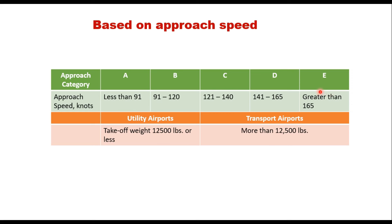FAA, based on approach speed, also specifies airports into two categories: utility airports and transport airports. When the takeoff weight is 12,500 pounds or less, they are called utility airports — small airports serving small aircraft. When the weight of the aircraft is more than 12,500 pounds, it is called a transport airport.